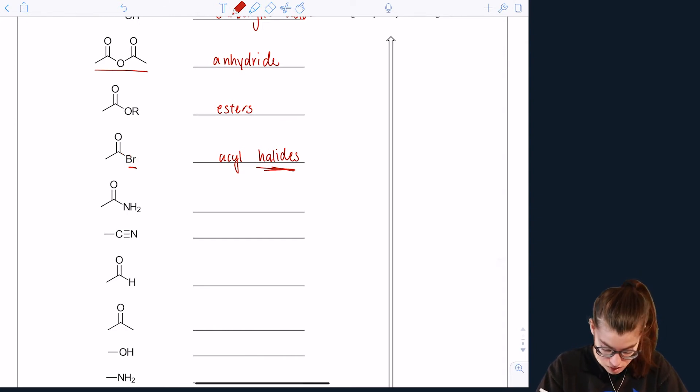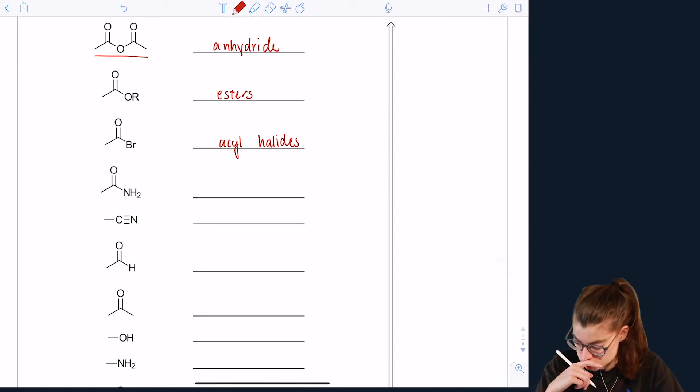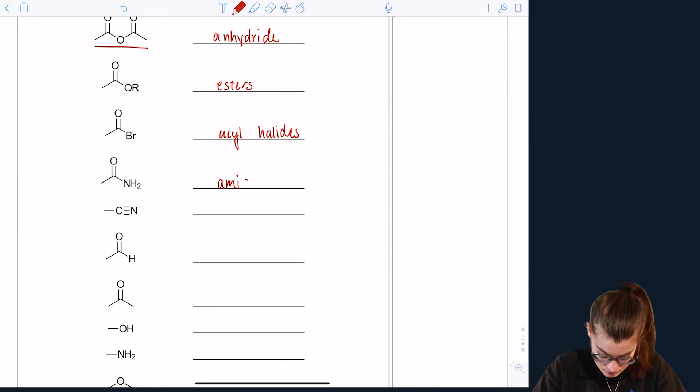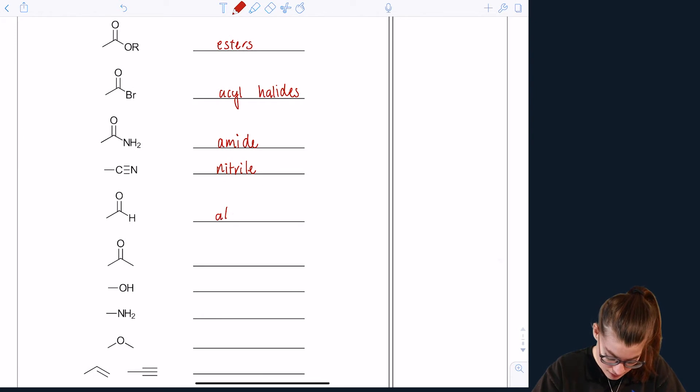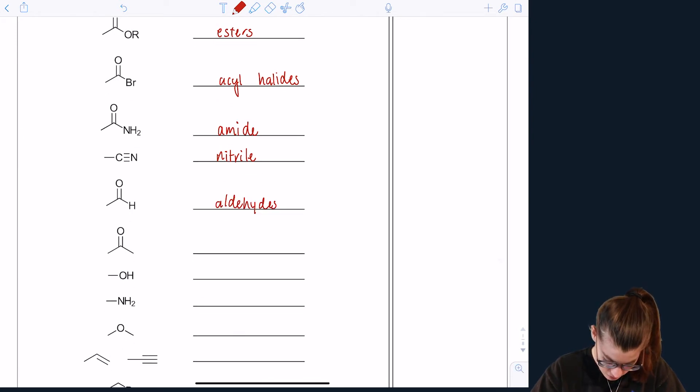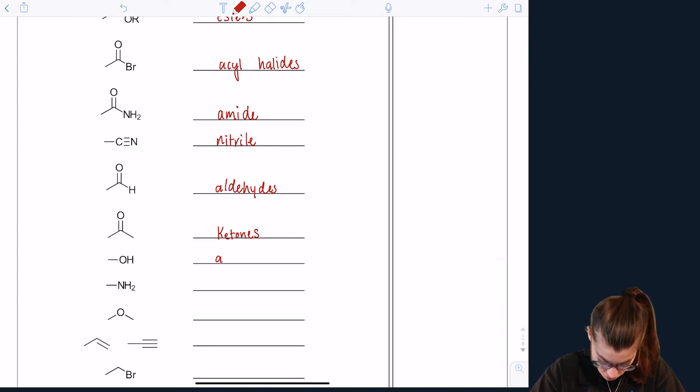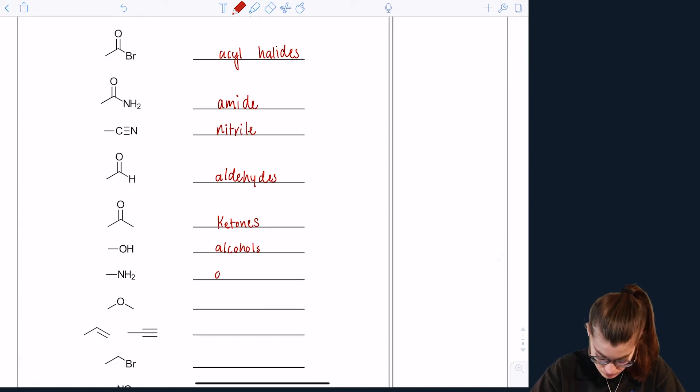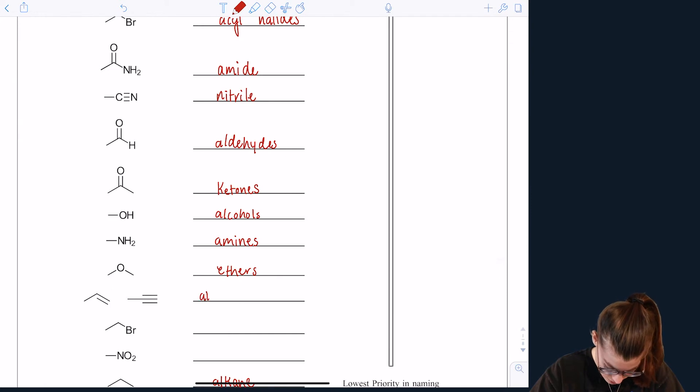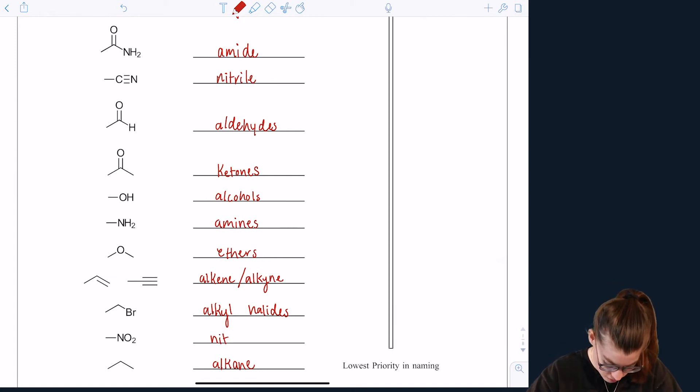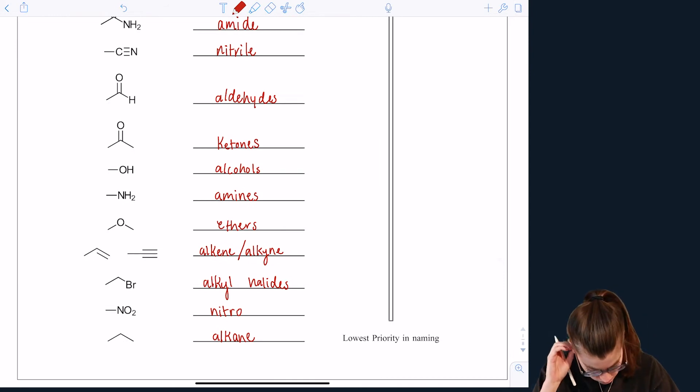It could be a chlorine or a fluorine, can be any of those. Next are the amide functional group, and then nitrile's functional group. And then we've got aldehydes and ketones, alcohols, amines, ethers, and then of course the alkenes and alkynes that we talked about already. And then we have a nitro functional group, which we won't really talk about. And then of course the very last would be alkanes.